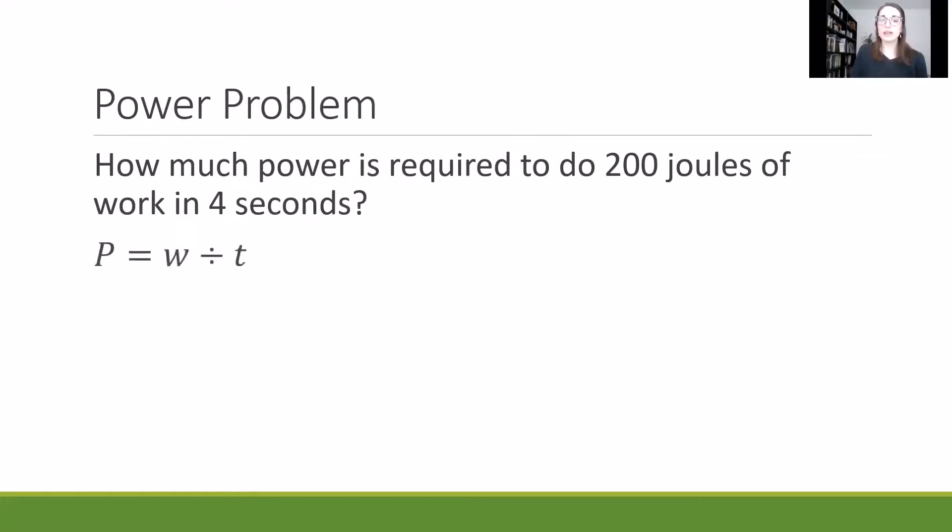Well, joules is a way of looking at energy and four seconds is our time. So if we have power equals energy divided by time, then we will do 200 for the 200 joules and we'll put in the time, which is four seconds. So 200 divided by four.